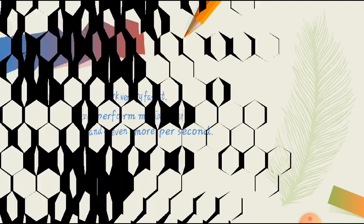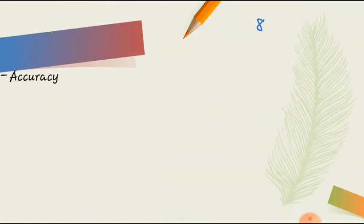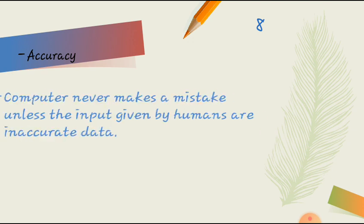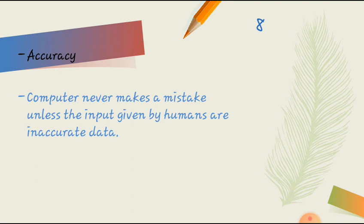Next we have accuracy. This is one of the most important characteristics of the computer. We all of us have studied in class the term GIGO. If you have not, then let me introduce the term GIGO. That stands for garbage in garbage out. Which means, if the input given to the computer is correct, the output is always correct.